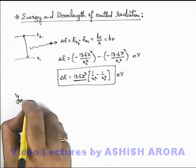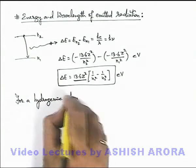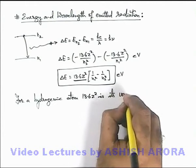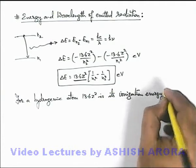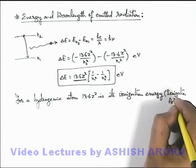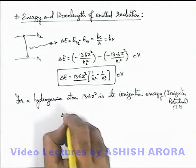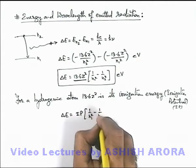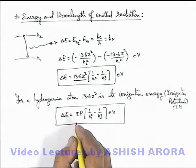We can also write for a hydrogenic atom, 13.6 z square is its ionization energy, which is also termed as ionization potential. This ionization potential is also denoted as IP. So here this energy delta E we can write as IP of the hydrogenic atom multiplied by 1 by n1 square minus 1 by n2 square, in electron volt or whichever unit you wish you can calculate the total energy.